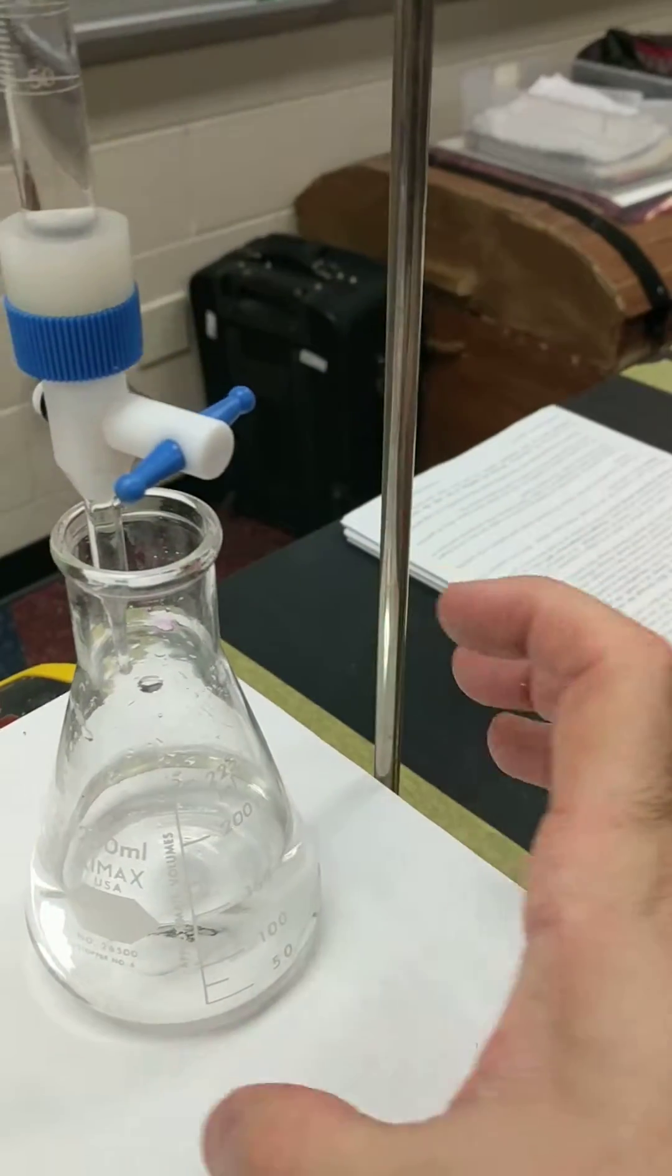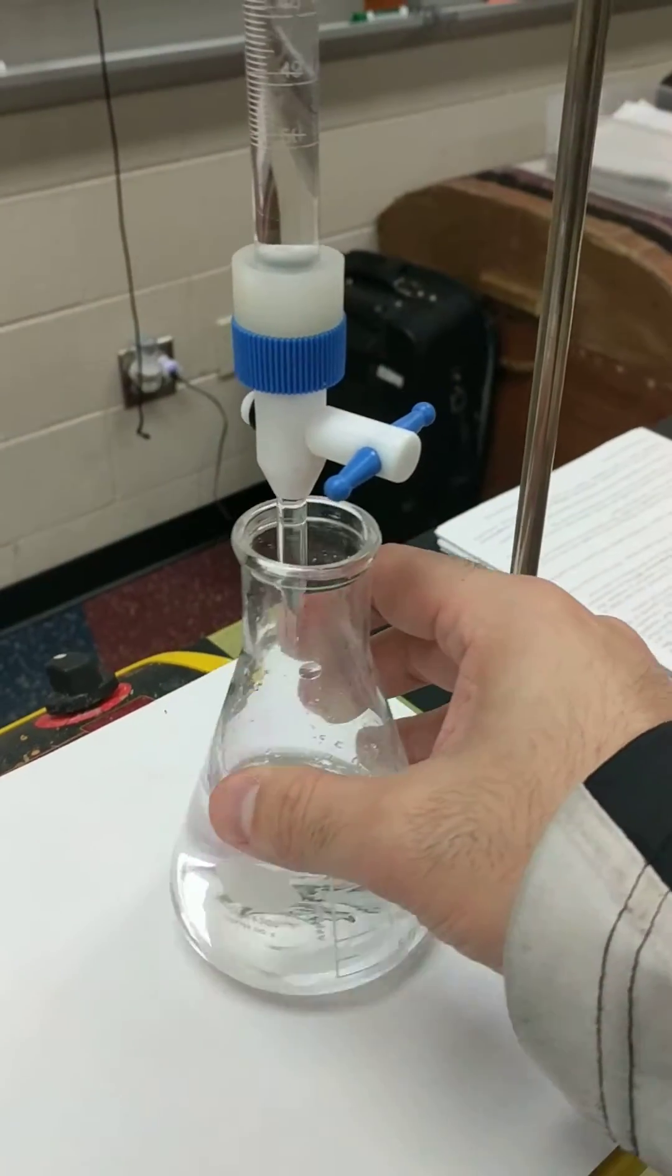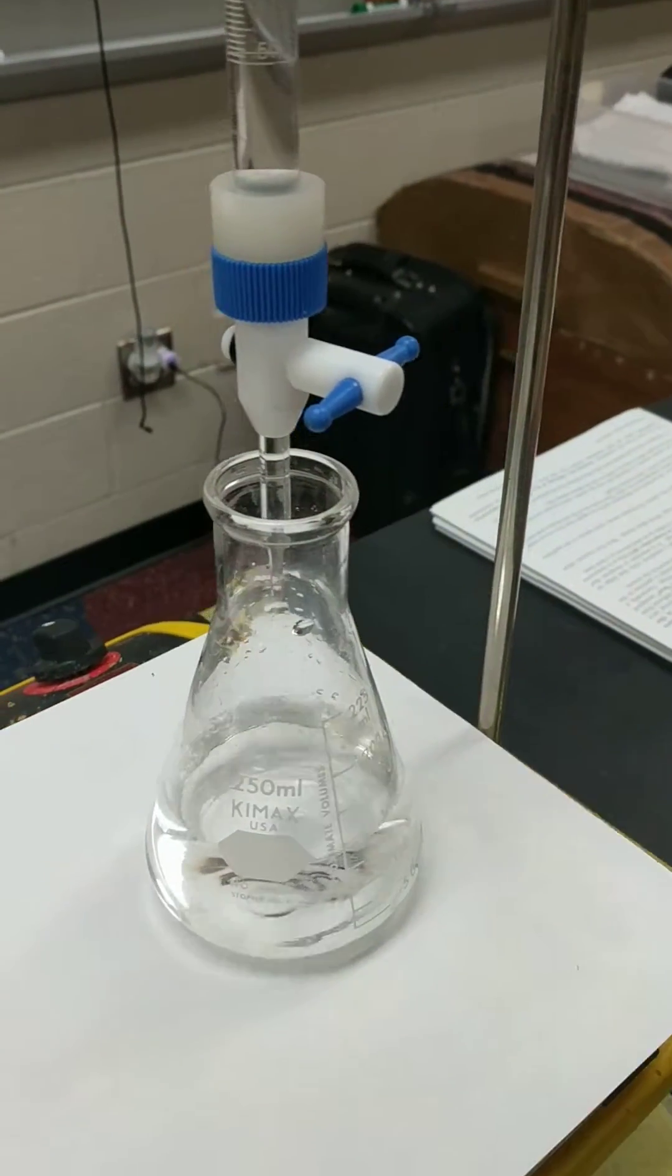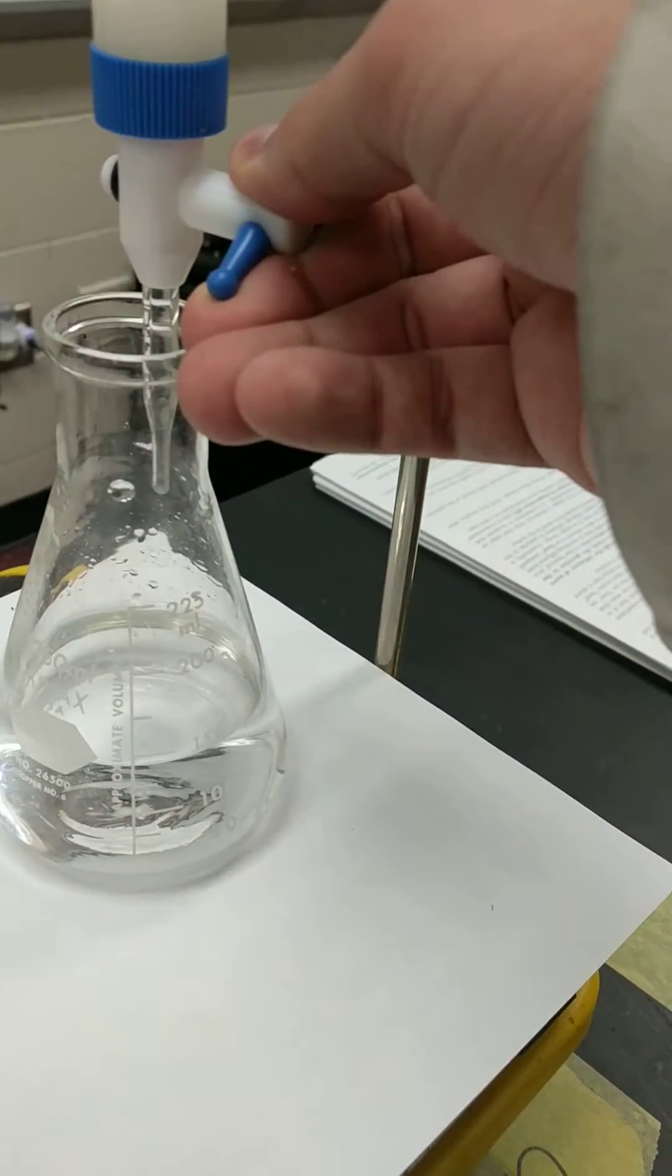So when the pink color kind of goes around like the entire flask, like I just had right now, it's very close to the endpoint, right? It's almost there. Right now it's still colorless. I'm going to add another couple of drops.